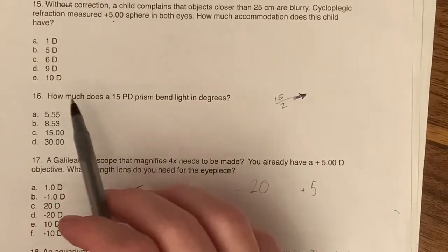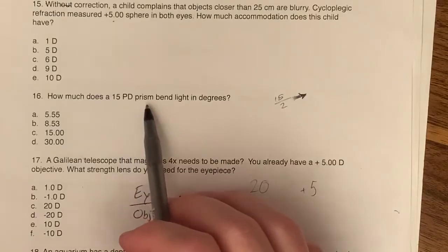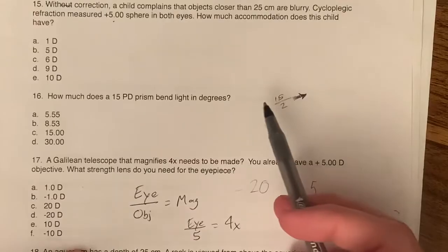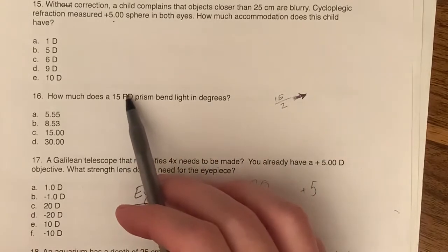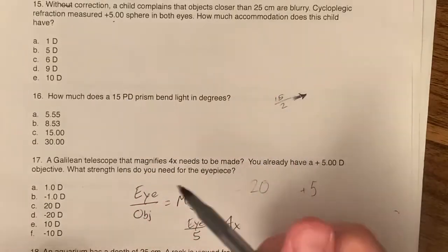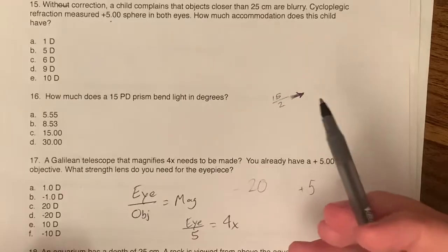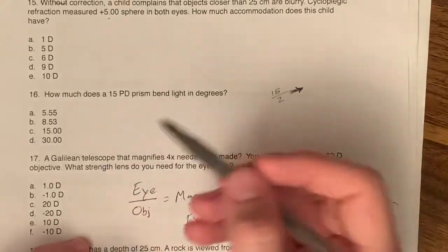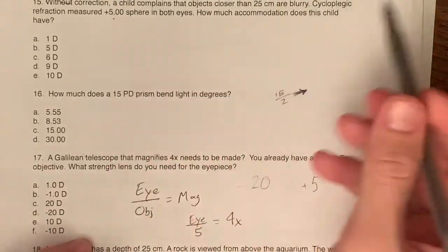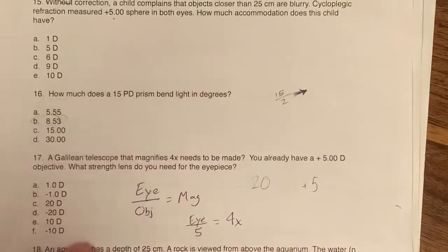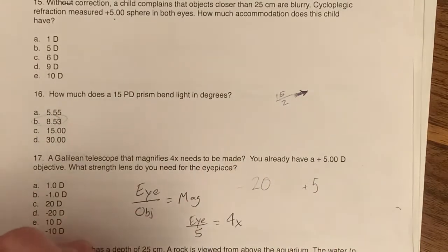Number 16, how much does a 15 prism diopter prism bend light in degrees? So here, all you need to know is that the prism diopter divided by two gives you the approximate degree of bending that occurs. So 15 divided by two gives you closest to 8.53. So B is the answer there.